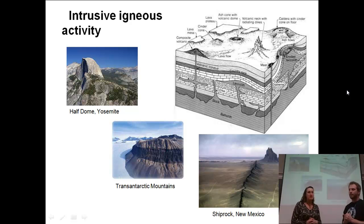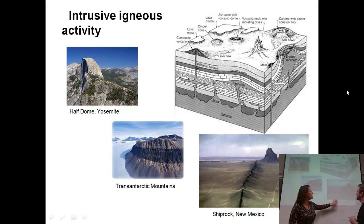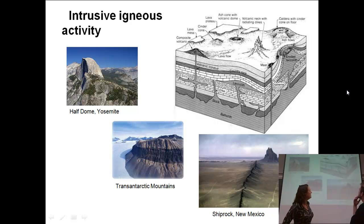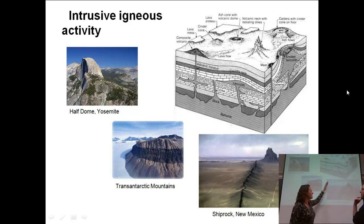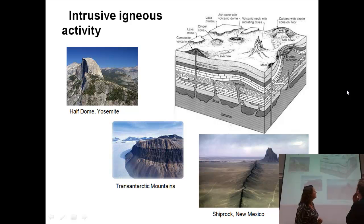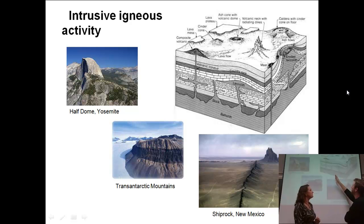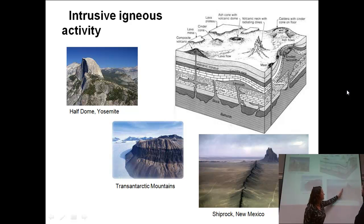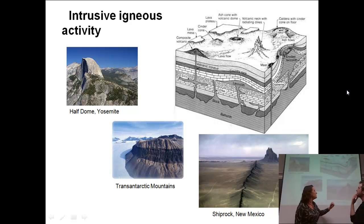Our third example is Shiprock, New Mexico — a spectacular place to visit. In this picture we actually have two different features: the volcanic neck and the volcanic dike. Let's deal with the volcanic dike first. Since we just talked about concordant, let's talk about discordant. The dike cuts across the existing rock layers — it's a discordant structure. What we're seeing is where the dike made it to the surface, or where the surface was eroded away exposing this dike structure that is part of Shiprock.